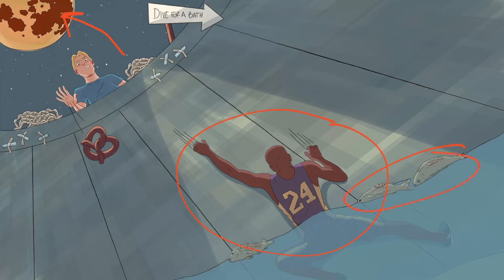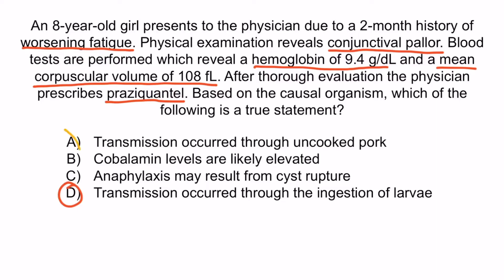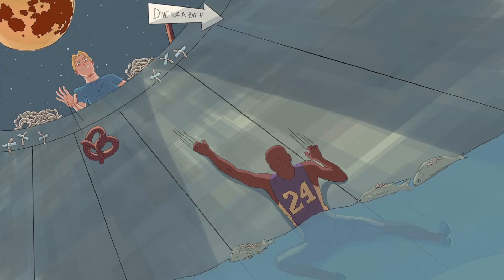A is incorrect because Diphylobothrium latum is transmitted through ingestion of larvae from uncooked fish, not pork. Uncooked pork can transmit other things, such as Taenia solium, which is a different type of tapeworm. B is incorrect because cobalamin levels will be low in this patient, not high — remember that Kobe Bryant is at the bottom of the pit. C is incorrect because this makes reference to the hydatid cyst in Echinococcus granulosus, a different type of tapeworm. That should be all you need to know about Diphylobothrium latum.